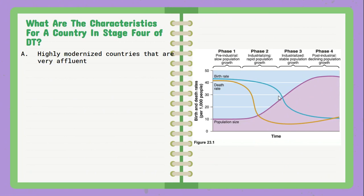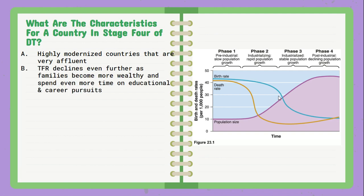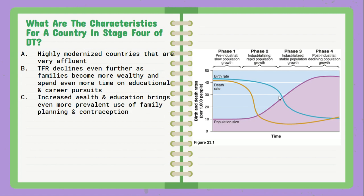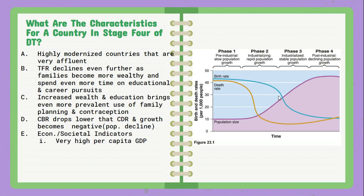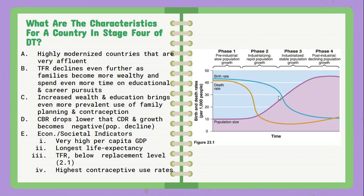Lastly, we get to countries that are now in Phase 4 — the post-industrialized country. This is where they are very modernized and very affluent. Here is where we see the TFR decline even further. In some cases, we can actually see a Stage 5 of demographic transition where the population is going to decline — birth rate will go below the death rate. Families are wealthy, they spend more time on education and career pursuits, they delay the age of marriage and having a first child, and they have better access to family planning. Here we can see that decline in population. They have a very high per capita gross domestic product, the longest life expectancy of all phases, they can fall below the replacement level fertility of 2.1, and they have the highest contraceptive use rates.